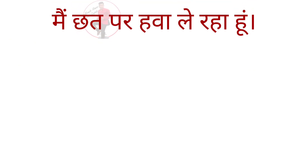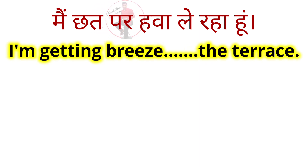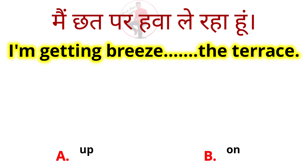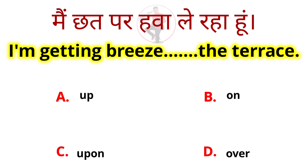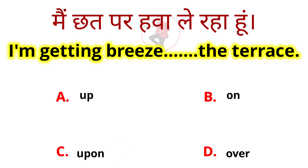Next: mein chhat par hawa le raha hun — I am getting breeze blank the terrace. Options: up, on, upon, over. Which one should be correct? The correct answer is 'upon' — you may have chosen 'on,' but let's see why 'on' does not apply here.